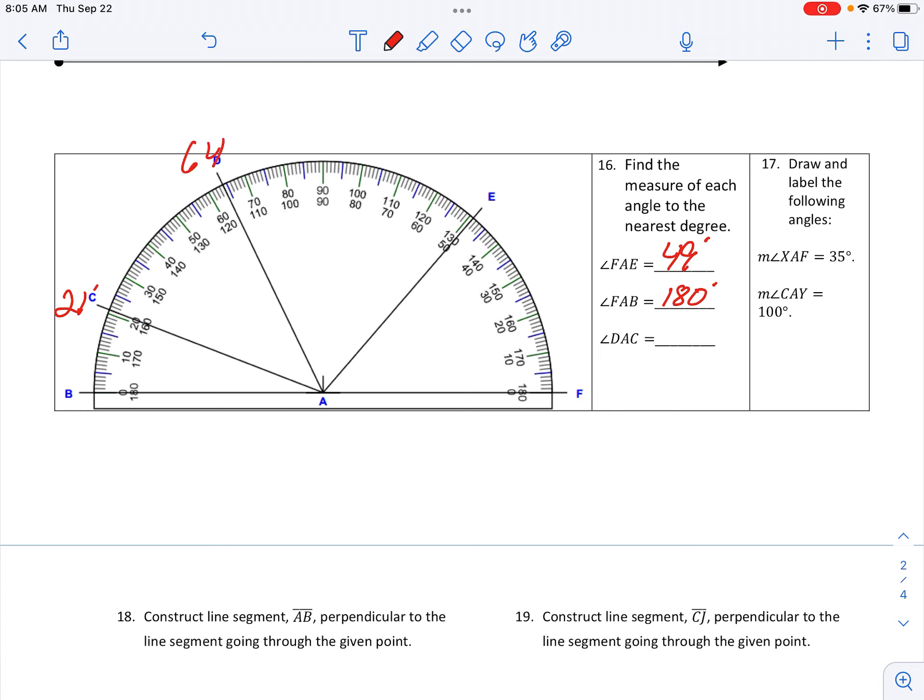Okay, let's go make X-A-F. So there's A-F right here. X is B at zero—it's going to be an acute angle, so 35 degrees puts me right about there for X-A-F.